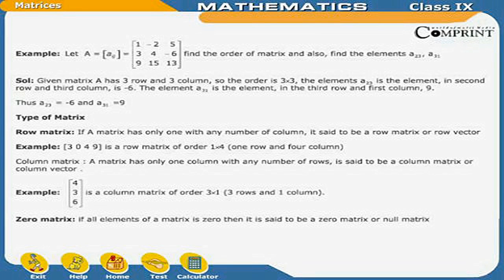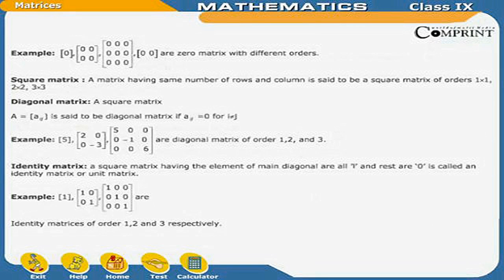Zero matrix: If all elements of a matrix are zero, then it is said to be a zero matrix or null matrix. For example, the matrices [0], [0, 0; 0, 0], and [0, 0, 0] are zero matrices with different orders.